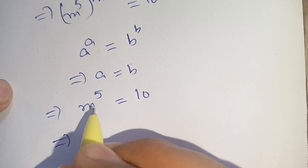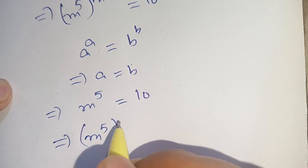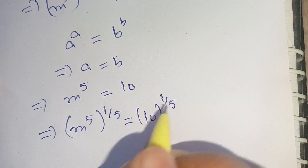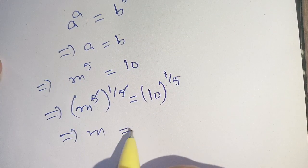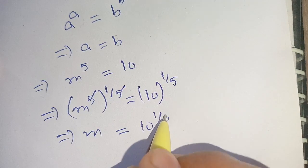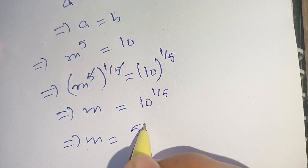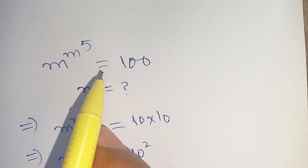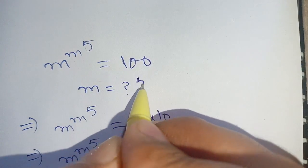Now on taking the power 1 divided by 5 on both sides, we can cancel out the 5 and the remaining result is m is equal to 10 raised to the power 1 divided by 5, or we can write this as m is equal to the 5th root of 10, which is the required value of m that satisfies our equation: m raised to the power m raised to the power 5 is equal to 100, implies m is equal to the 5th root of 10.